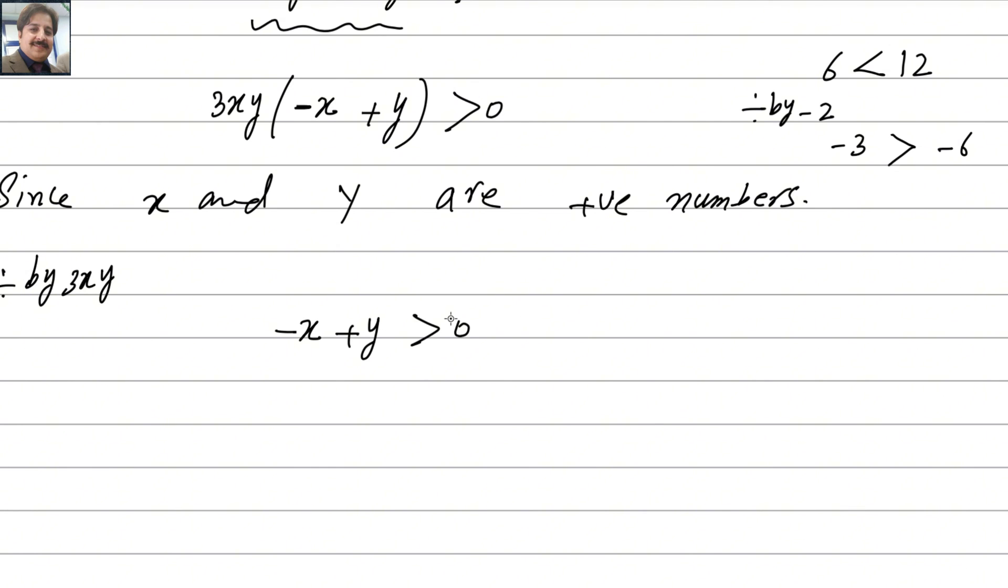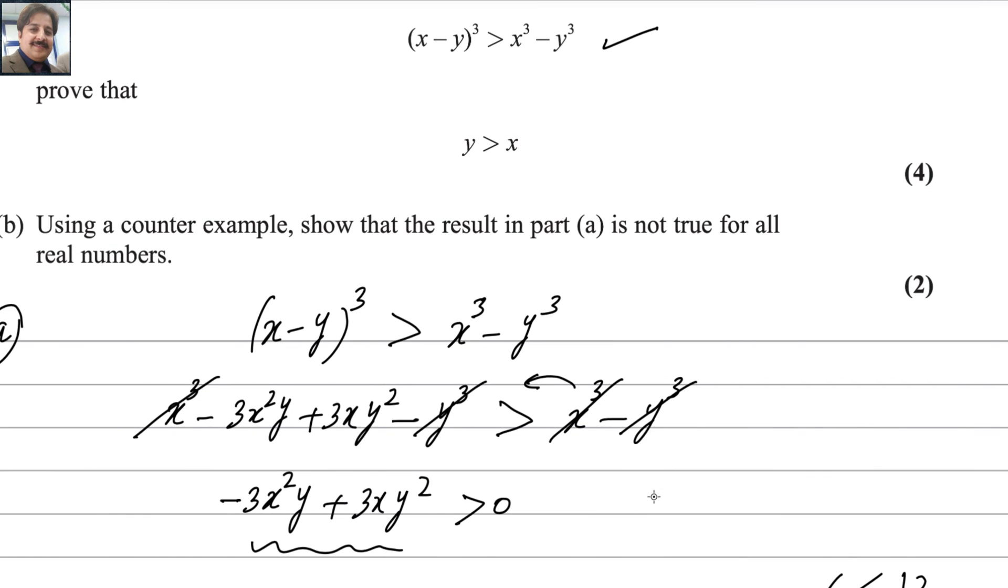Once you divide, you're left with -x + y greater than 0. This negative x goes to the right side, giving y greater than x, as required. So the first part is done. For the second part, using a counter example, show that the result in part (a) is not true for all real numbers. Here the condition was y greater than x.